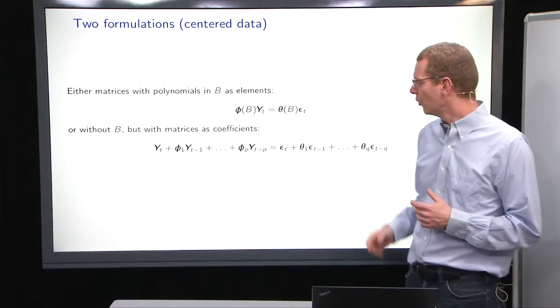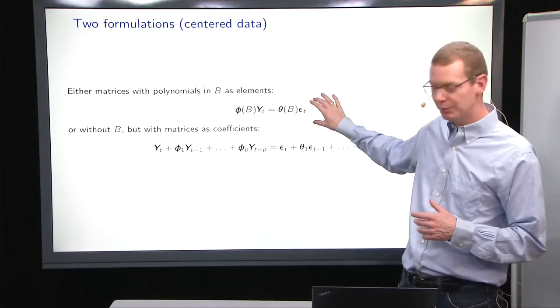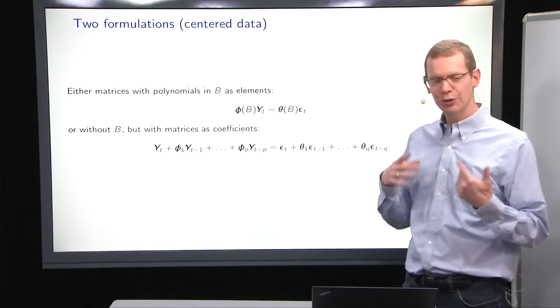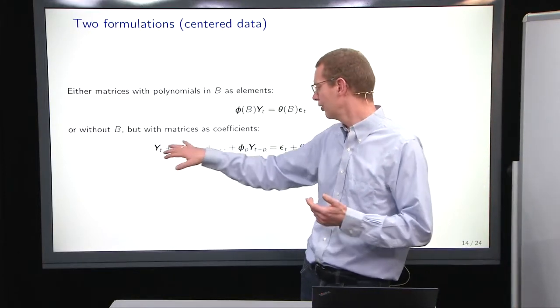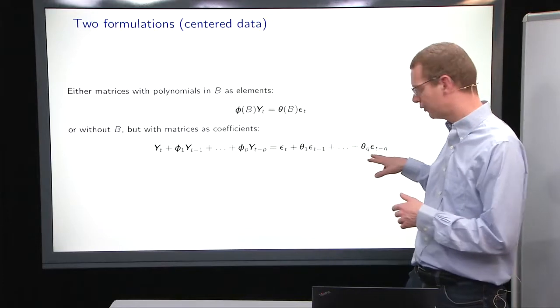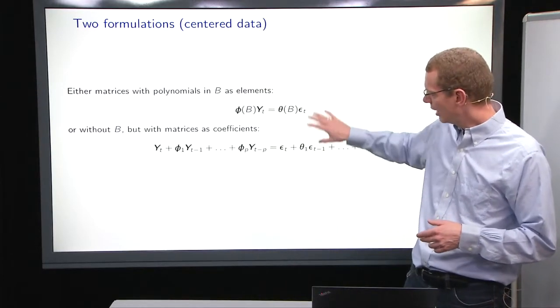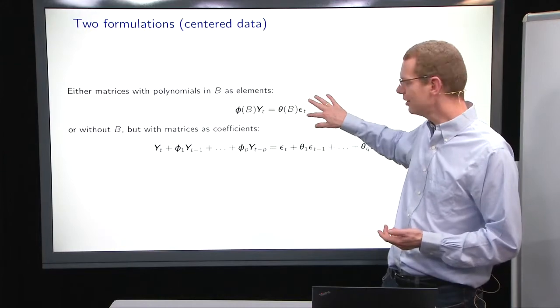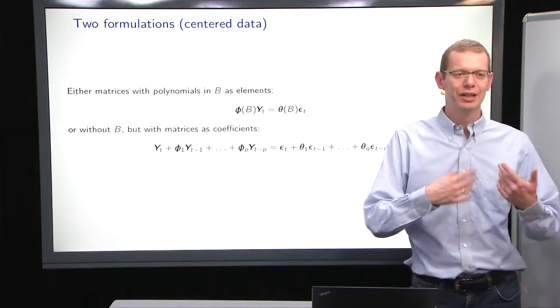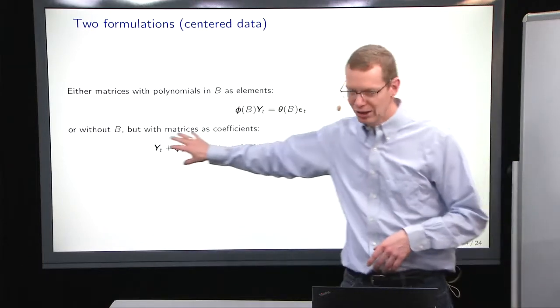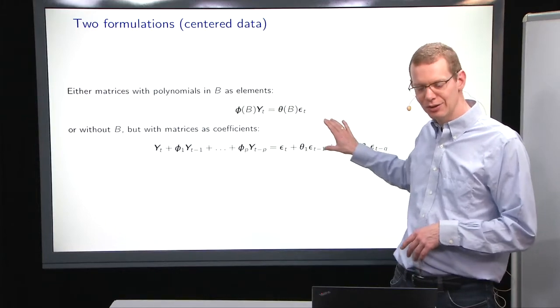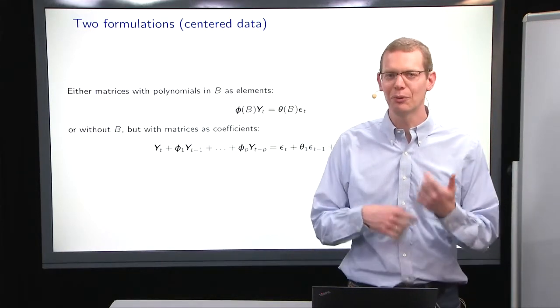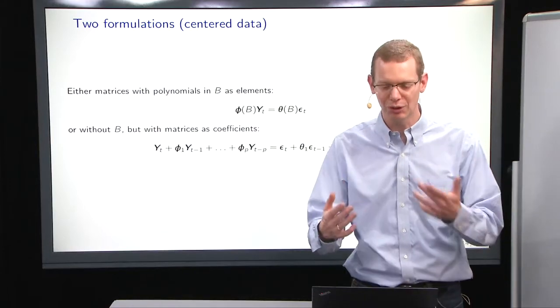So basically, what you have is a representation as a polynomial here in B. You can either write it just as an operator or you can write it out. Or, if you don't want to use the Bs, you can just write it as yt and how it depends on the yt minus 1. And likewise, for the epsilon, which representation, again, is nicer to use depends on what you want to do. It can be easy to do the Z-transform up here, whereas what you see in a moment is when you're going to look at the autocovariance structure, it's nicer to have it a little bit more spelled out in the way that we have here. So again, pick and choose the representation that is most efficient for doing what you want to be doing.